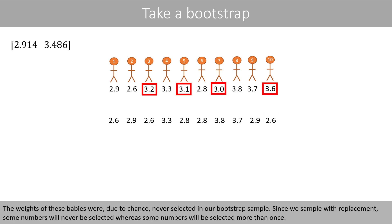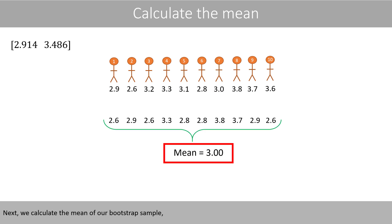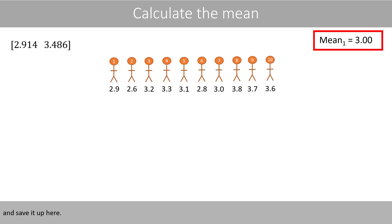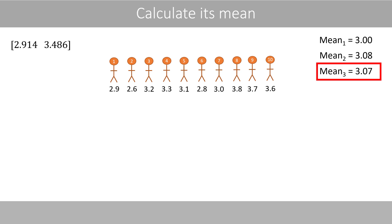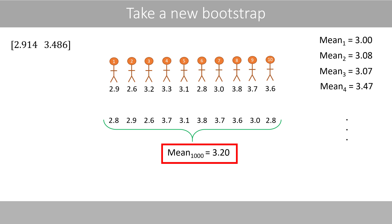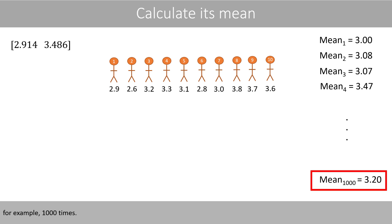We continue like this until we have drawn 10 numbers from the original data. Note that we drew 10 values because our sample size was 10. Due to chance, we happened to select the weight of the second baby three times, while the weights of some other babies were never selected in our bootstrap sample. Since we sampled with replacement, some numbers will never be selected whereas some numbers will be selected more than once. Next, we calculate the mean of our bootstrap sample.